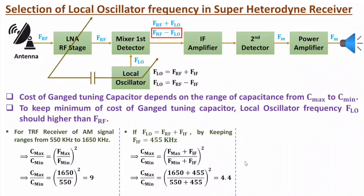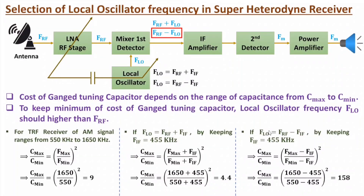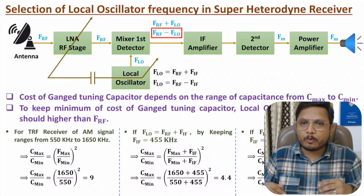What if we take FLO = FRF − FIF? In that case, C_max to C_min = ((F_max − FIF) / (F_min − FIF))² = ((1650 − 455) / (550 − 455))², which gives 158. So with this local oscillator frequency, the mixer still generates FIF, but the cost of the ganged tuning capacitor has a range of 158 — C_max to C_min ratio is 158, which is quite high. To keep the cost of the ganged tuning capacitor low, we keep the local oscillator frequency to be FRF + FIF. This is how the super heterodyne receiver works.